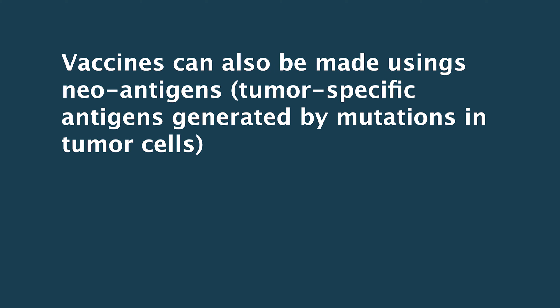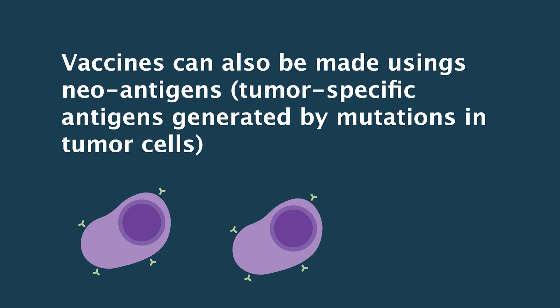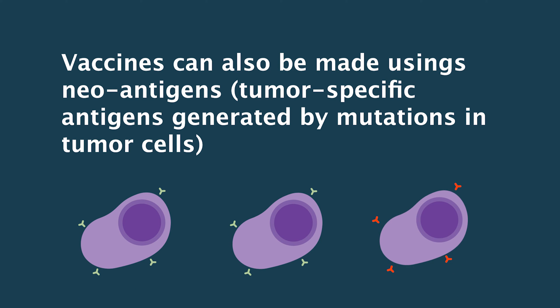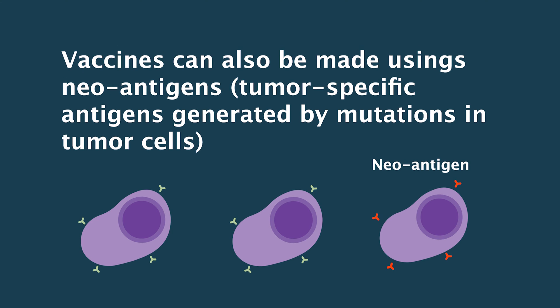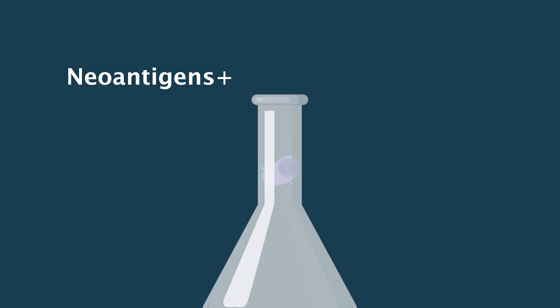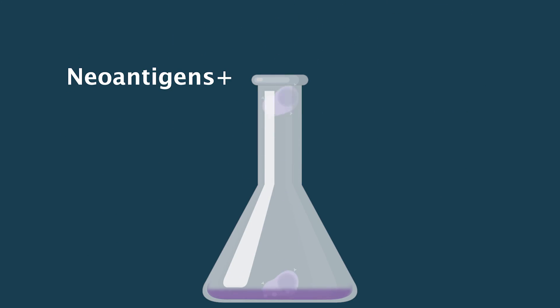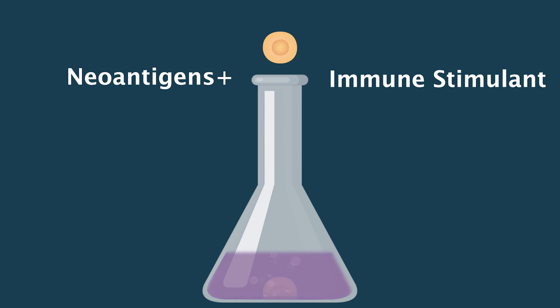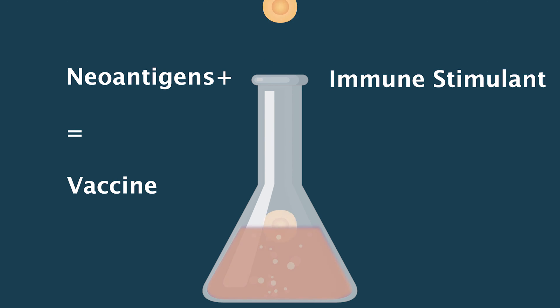Another example, which has been an area that people are very interested in, is finding mutations in a cancer and showing that those mutations make proteins that are completely new for the body, and using those proteins as a driver of an immune response — what we call neoantigens. Those neoantigens can be introduced with ways that stimulate the immune system, so you're taking things that are unique to the tumor and then stimulating the immune system around them so the patient will make an immune response.